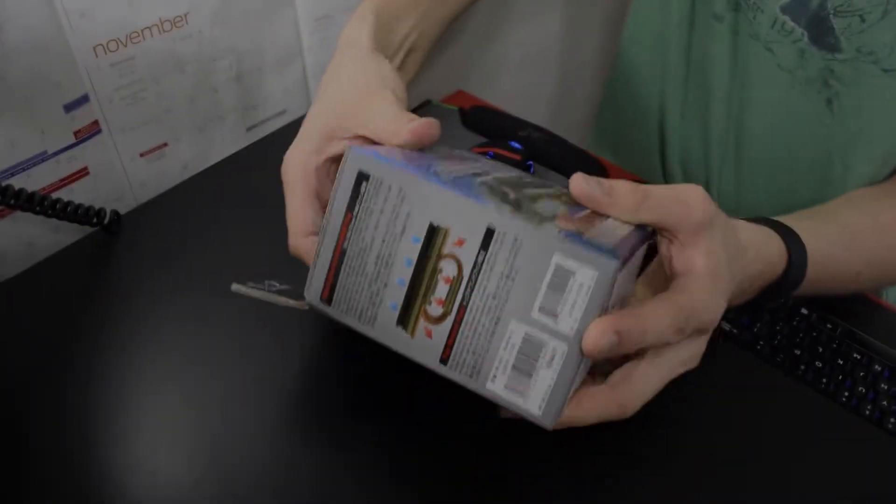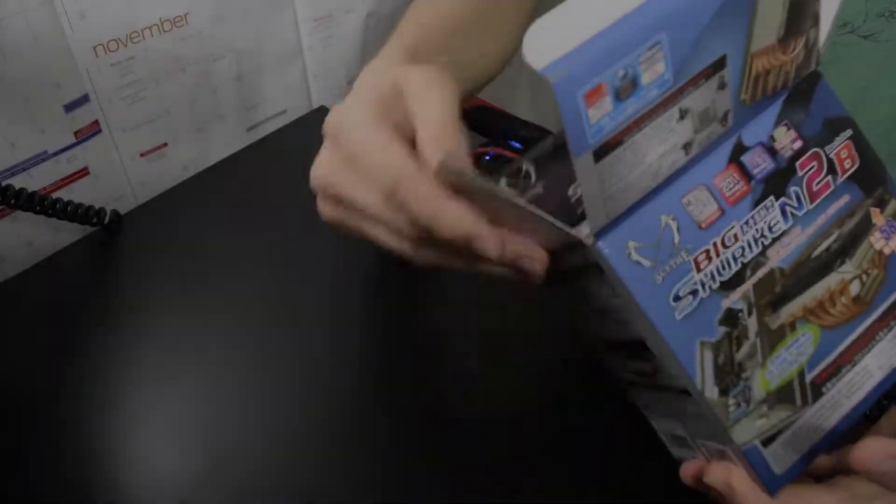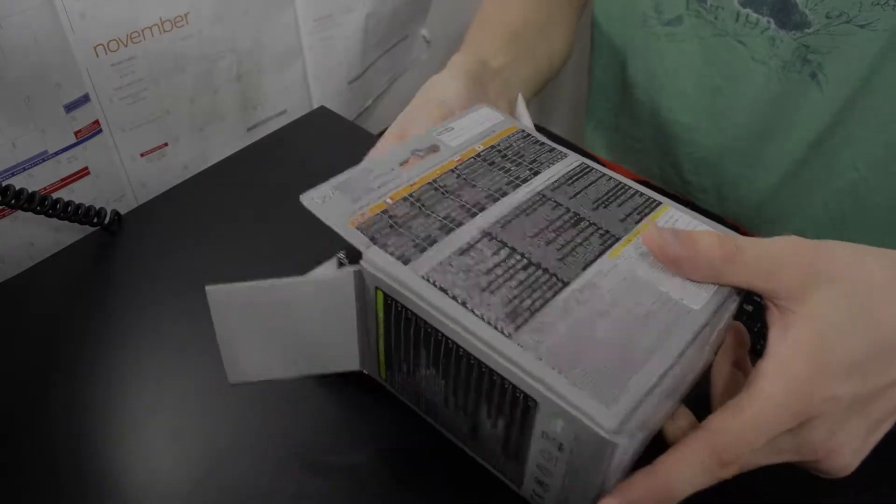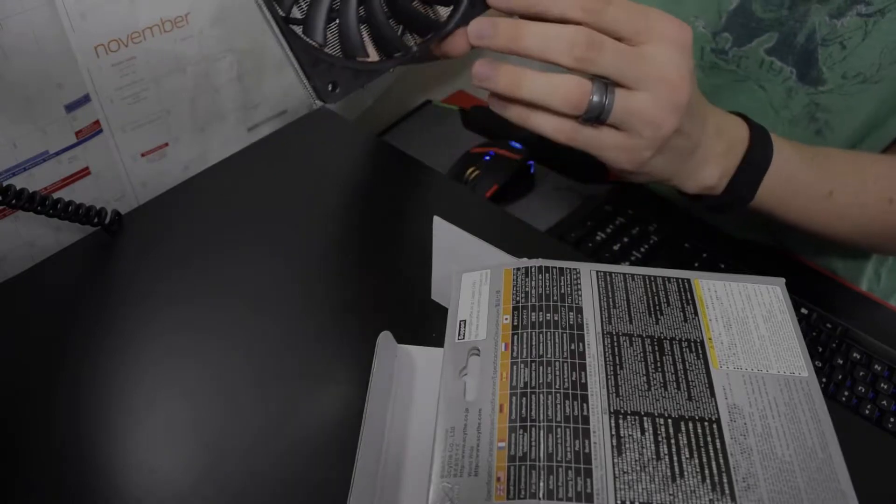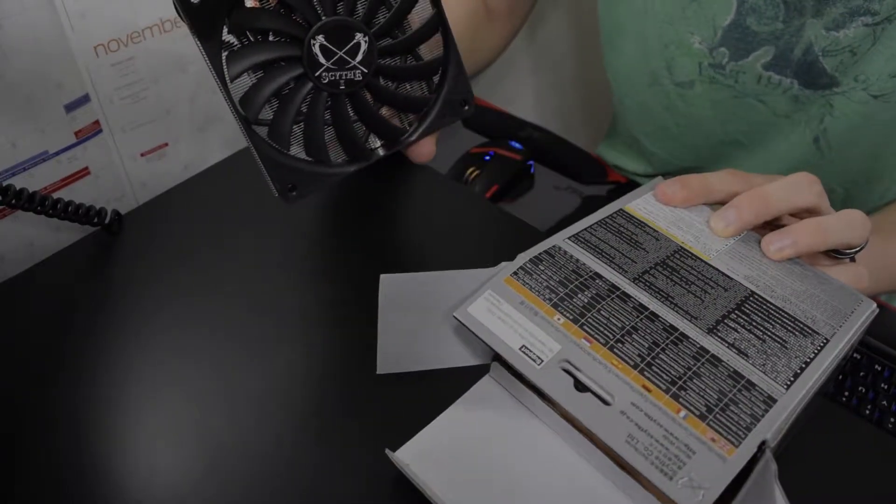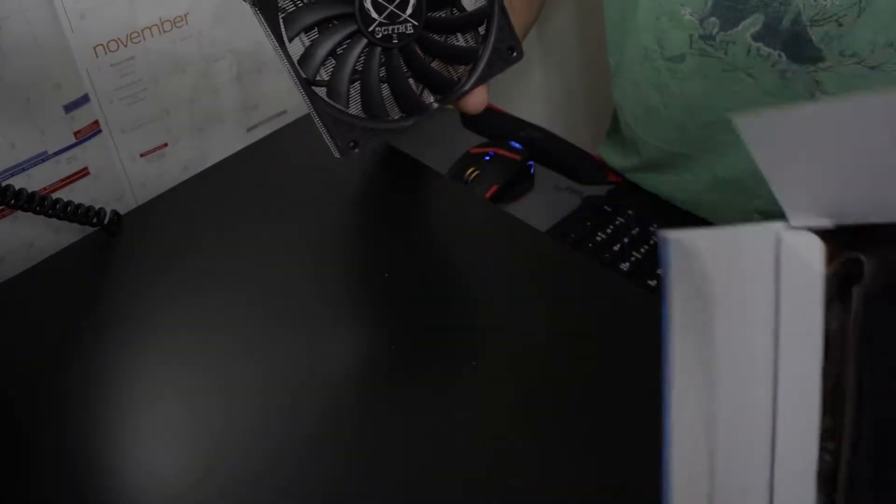So I'm just gonna go ahead and open up the box and see what's in here. Alright, here we go. Here's the CPU cooler itself with a nice big - I think that's a 120 millimeter fan. Let me see... yeah, 120 millimeter fan with the connector, and you can also see the contact plate right there.